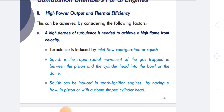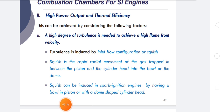Turbulence is induced by inlet flow configuration or squish. Squish is the rapid radial movement of gas trapped between the piston and cylinder head into the bowl or dome. Squish can be induced in SI engines by having a bowl in the piston or with a dome-shaped cylinder head.